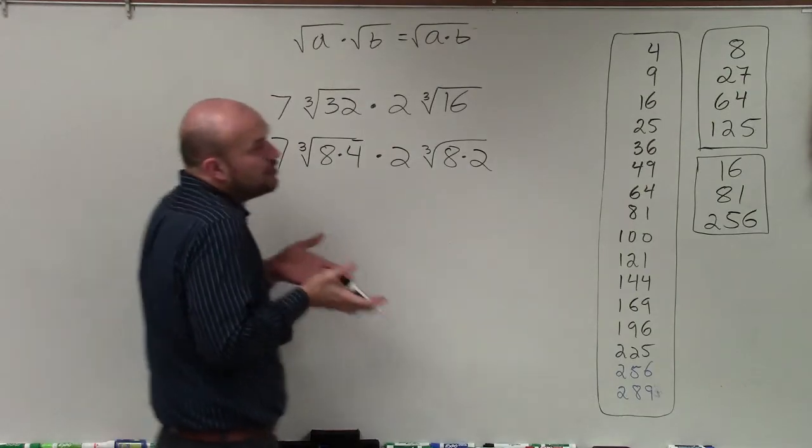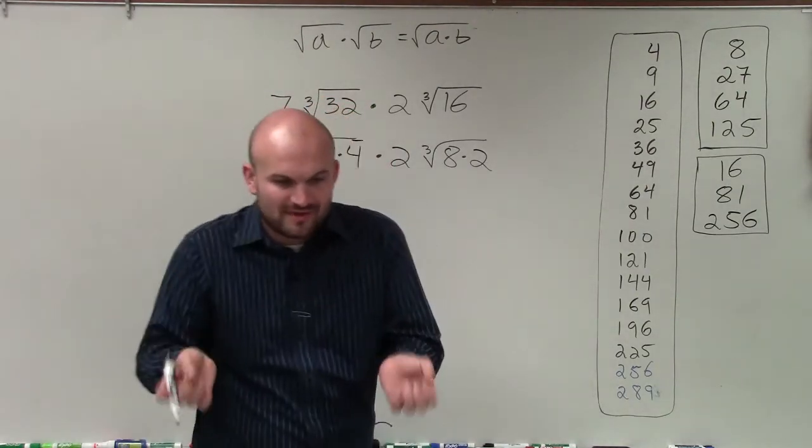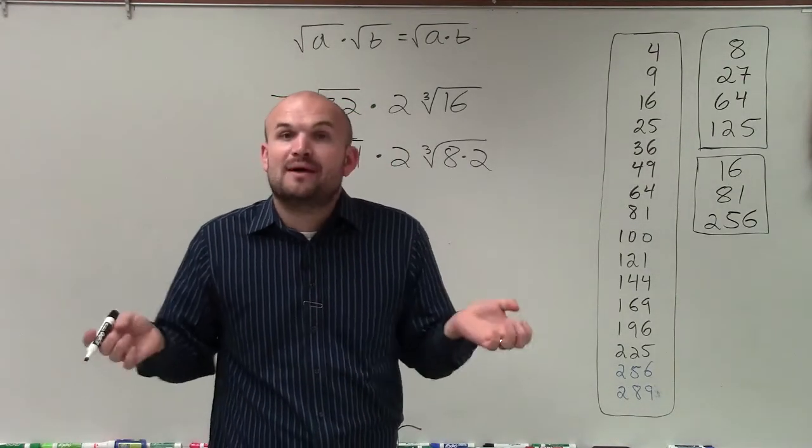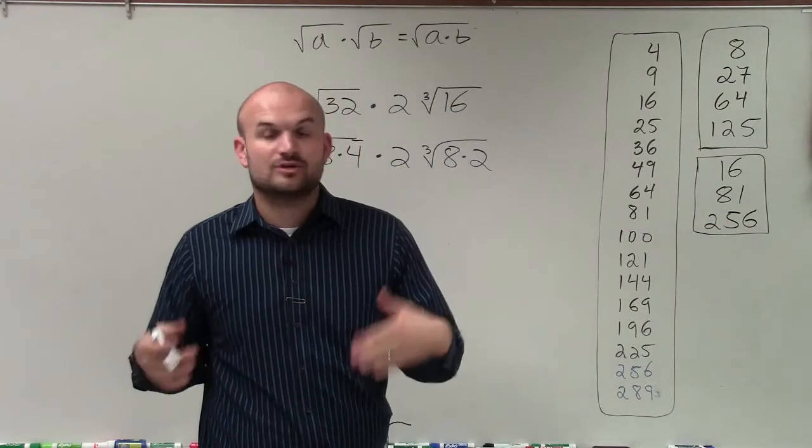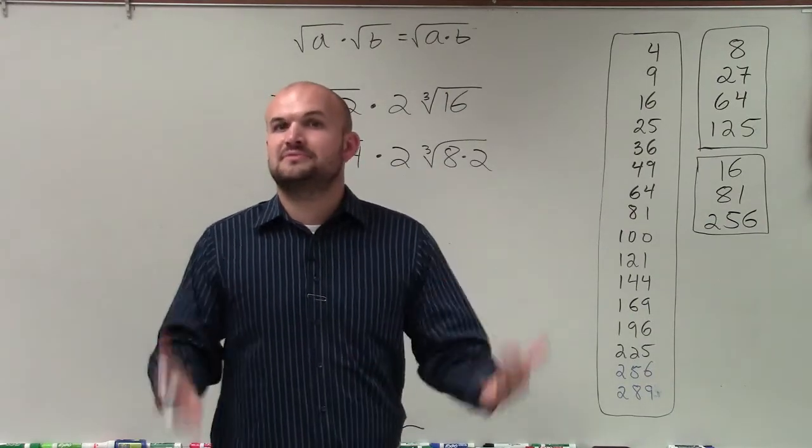And what's important about that is, I know the cube root of 8, because the cube root of 8 says what number multiplied by itself 3 times gives us 8, which is 2. 2 times 2 times 2 is 8.